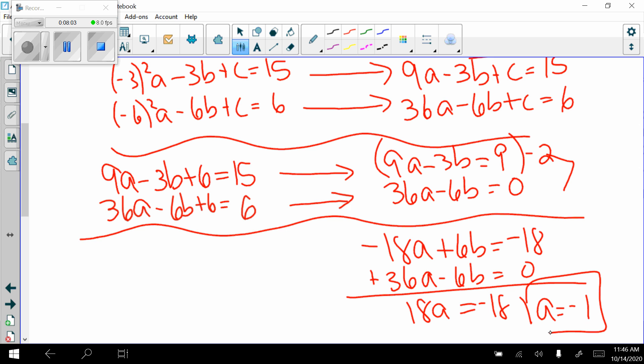I just need to find b. Plug it into either of these equations. It doesn't matter which one. So if I plug it in right here, 36 times negative 1, minus 6b equals 0. So I get negative 36 minus 6b equals 0. Move my 36 over. Negative 6b equals 36. Divide by negative 6. B equals negative 6.